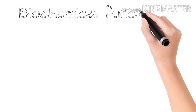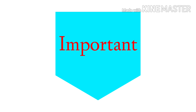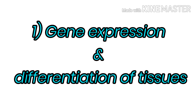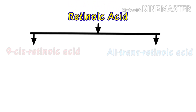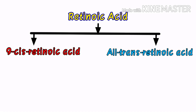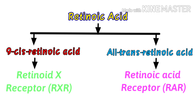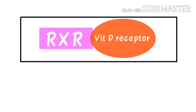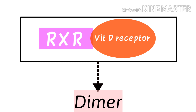Biochemical functions of vitamin A. Firstly, regulation of gene expression and differentiation of tissues. Retinoic acid acts in its two forms like steroid hormones: 9-cis-retinoic acid and all-trans-retinoic acid. All-trans-retinoic acid binds with retinoic acid receptors (RAR). 9-cis-retinoic acid binds with retinoid X receptor (RXR). RXR also forms dimers with the vitamin D receptor. The impairment of the biochemical effects of vitamin D in vitamin A deficiency may be attributed to this relationship.